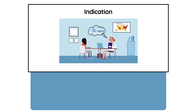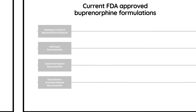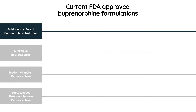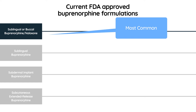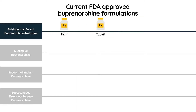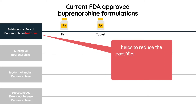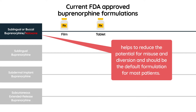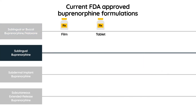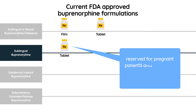Currently, buprenorphine is available in several formulations. Sublingual or buccal combinations of buprenorphine and naloxone are the most commonly available preparations, available in film or tablet form. The addition of naloxone in the combination formulation helps to reduce the potential for misuse and diversion and should be the default formulation for most patients. Monotherapy buprenorphine, available in tablet form, has a higher misuse liability and is often reserved for pregnant patients and those with documented allergies to naloxone.